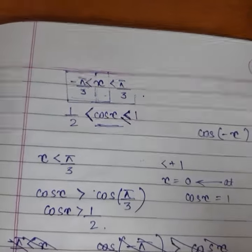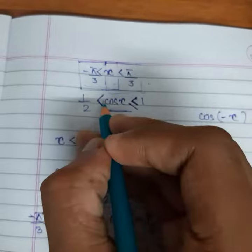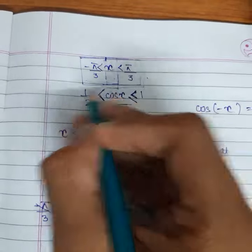The next part in this question is why did we consider only this interval for finding out the minimum value of cos x, and why did we not take this part into consideration?